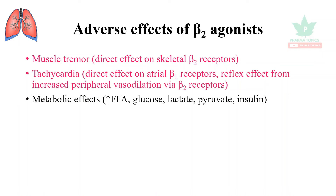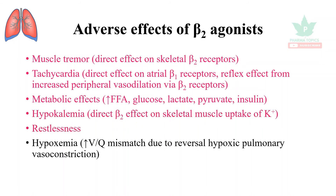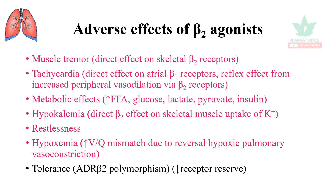Metabolic effects include increases in free fatty acids, glucose, lactate, pyruvate, and insulin. Hypokalemia may occur because beta-2 agonists acting on skeletal muscles increase the uptake of potassium. Other effects include restlessness and hypoxemia due to ventilation-perfusion ratio mismatch and reversal of hypoxic pulmonary vasoconstriction.